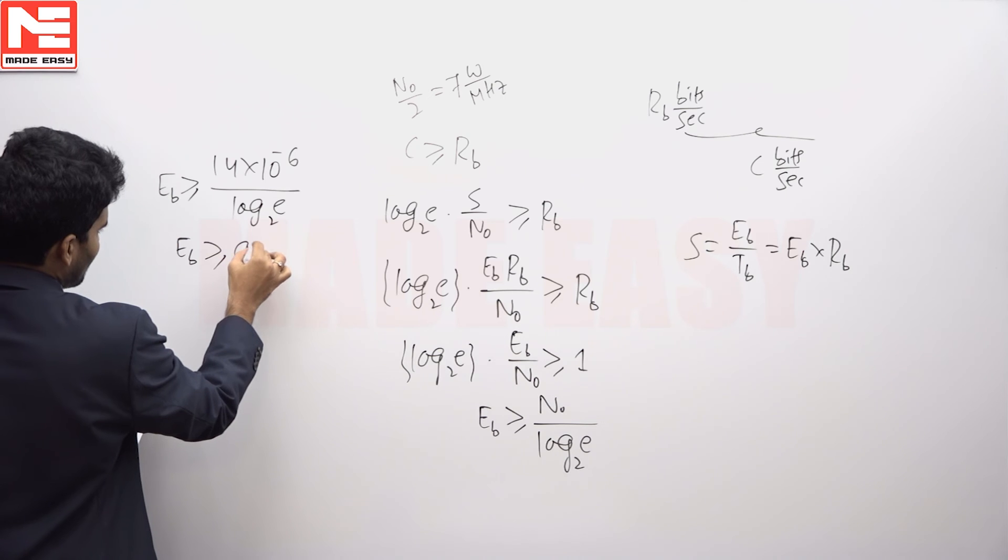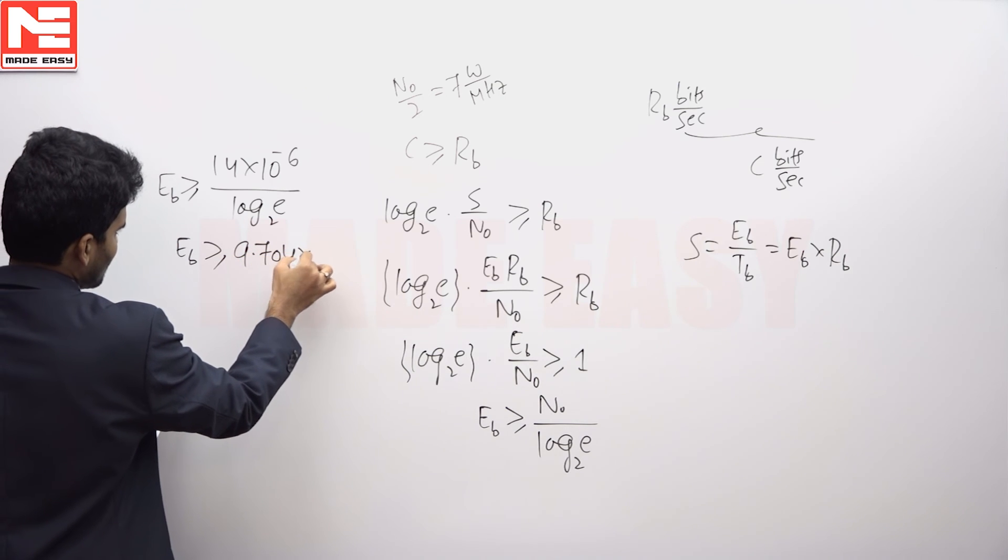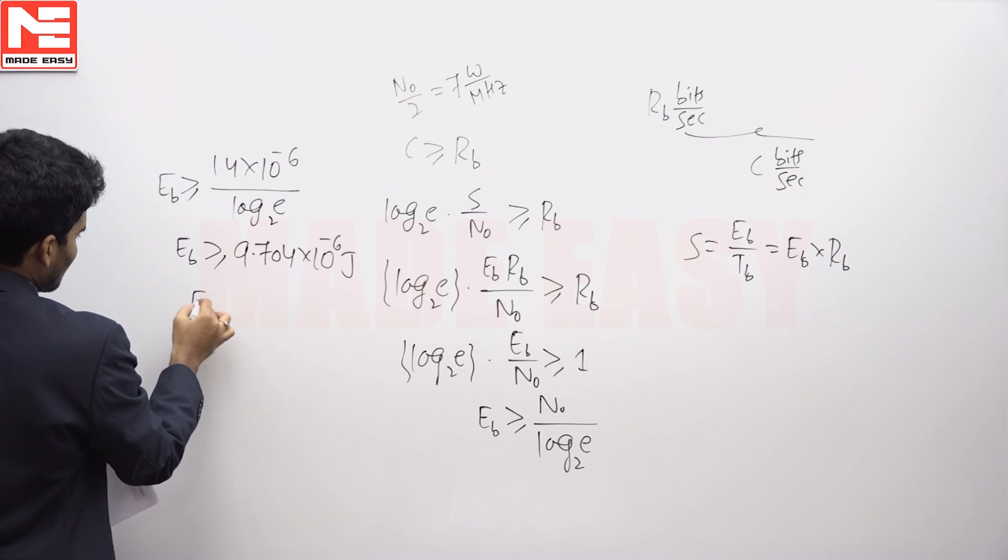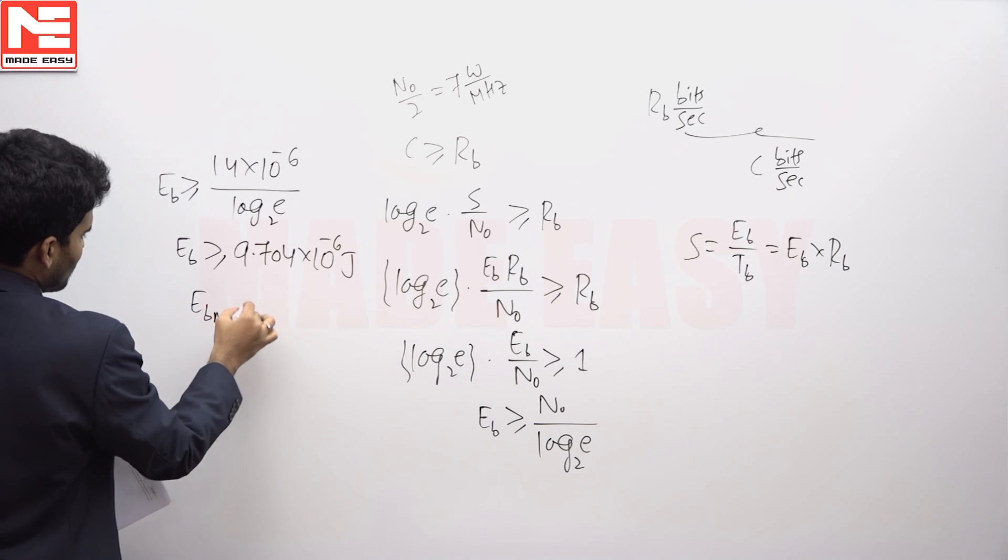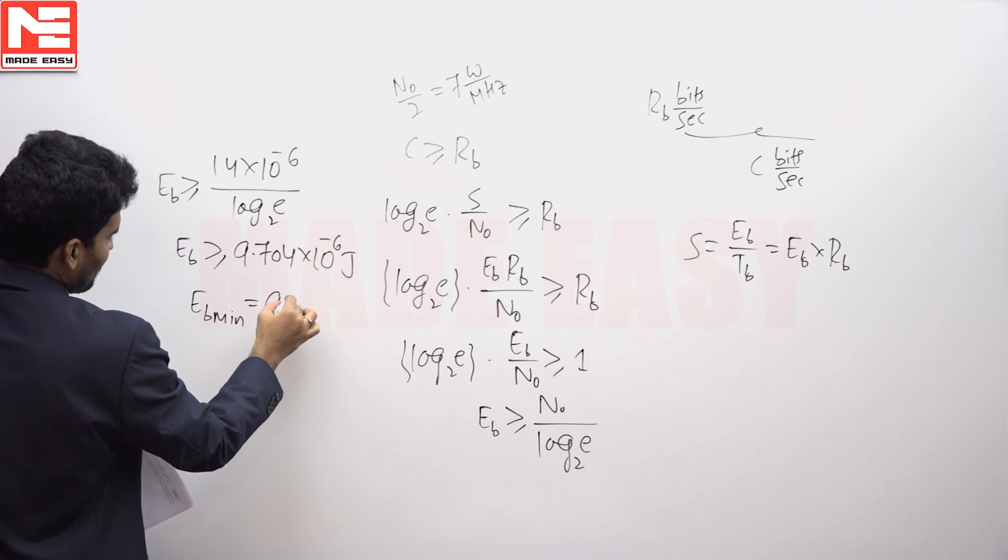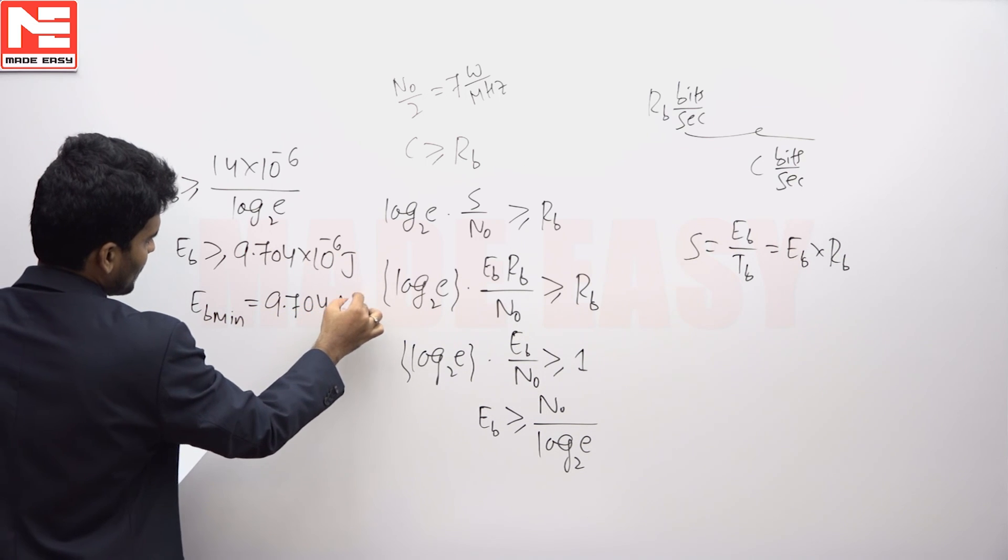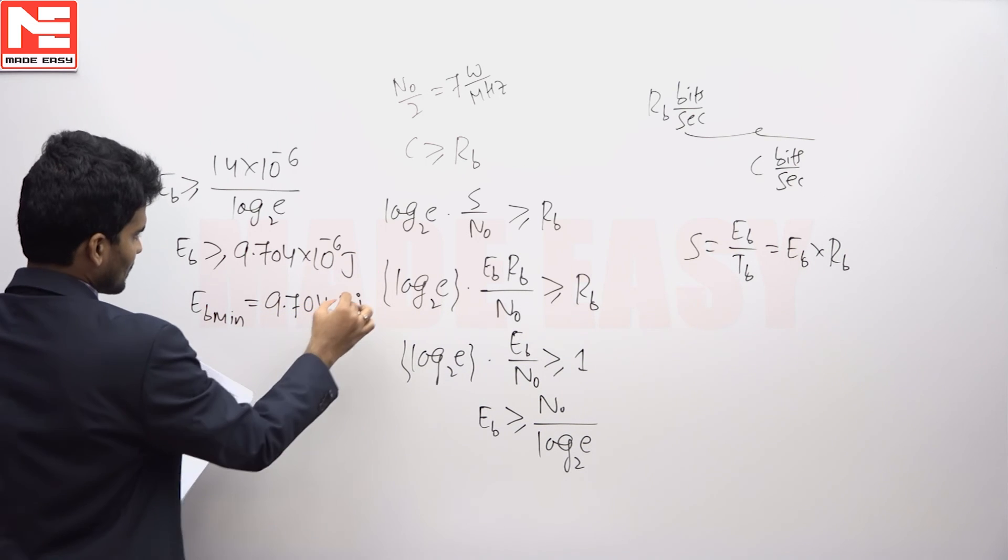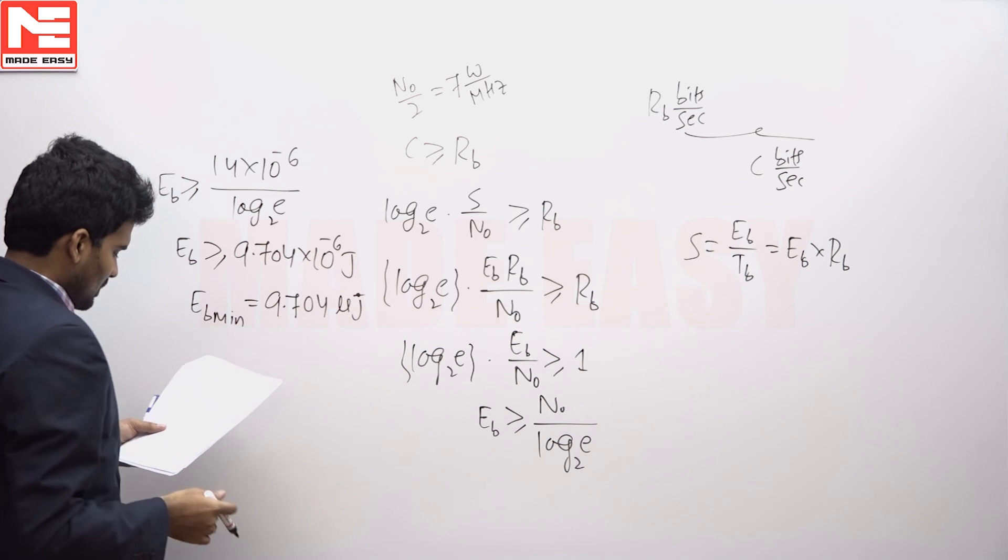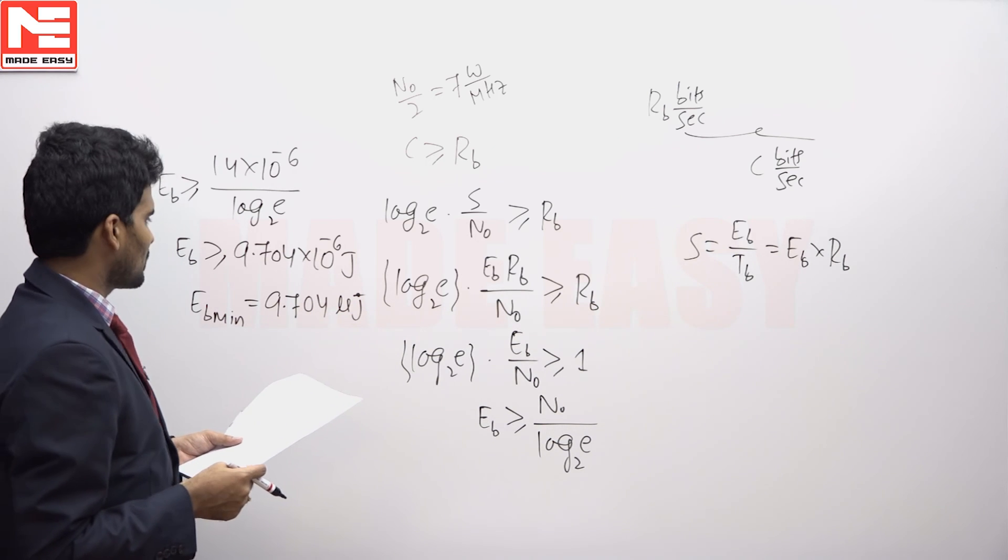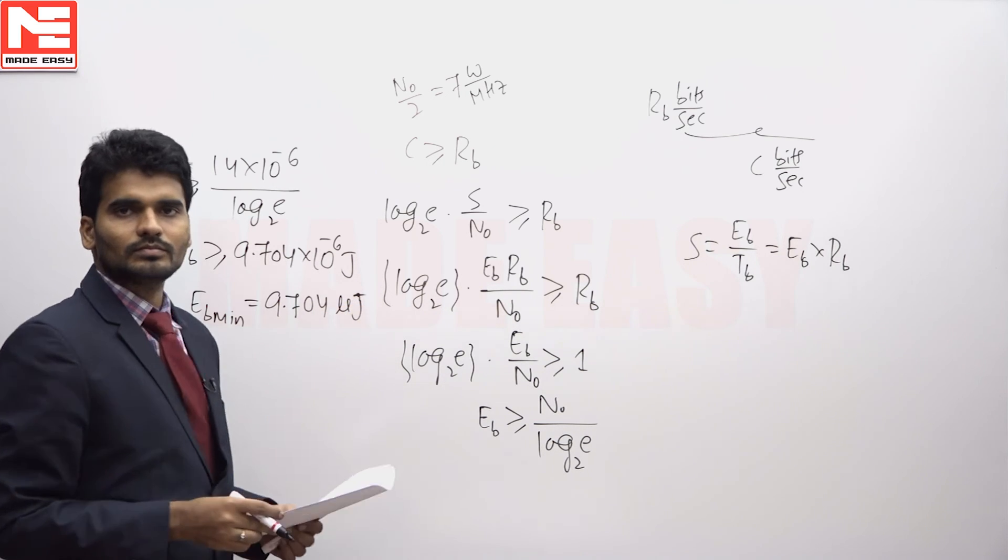So it comes to EB should be greater than or equal to 9.704 into 10 power minus 6 joules. So the energy should be at minimum 9.704 microjoules.